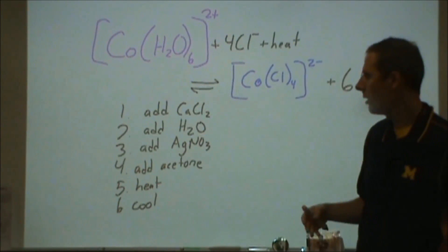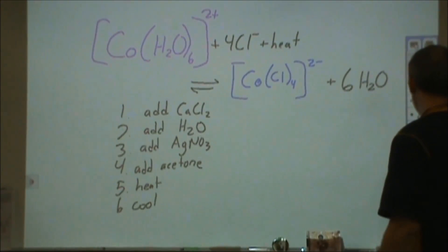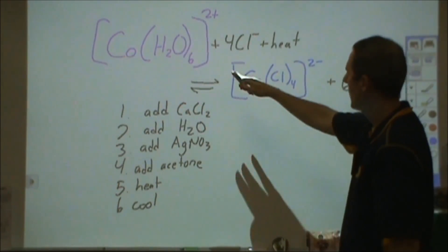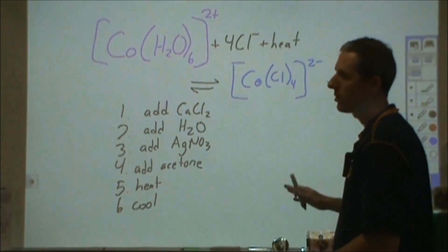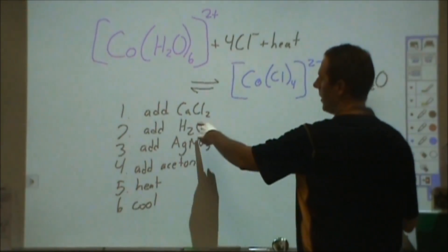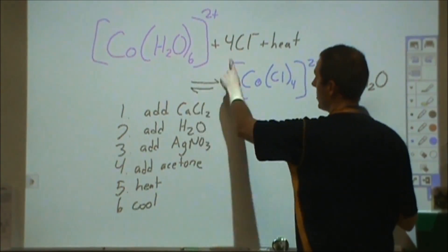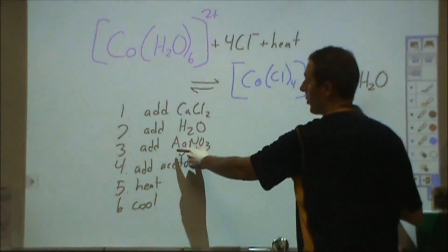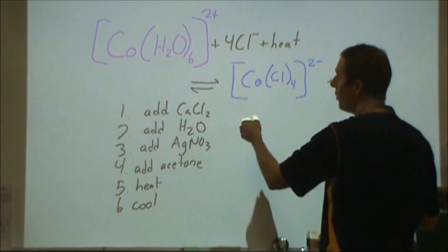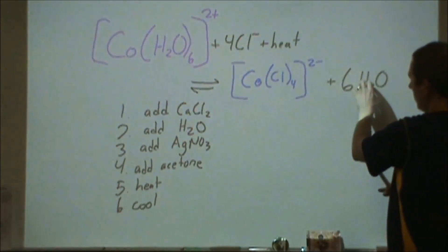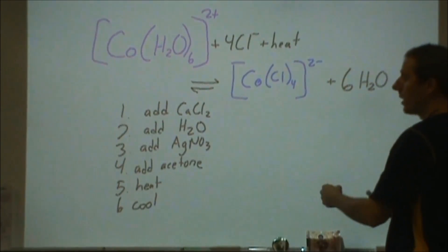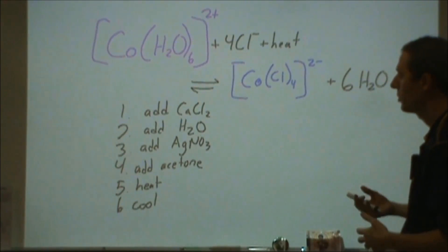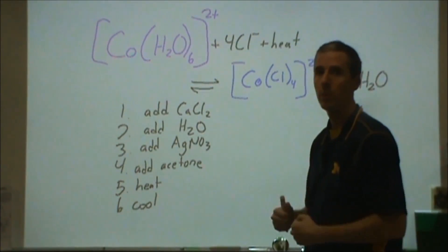What we're going to do is show some Le Chatelier principle demonstrations where we're going to add various features to this mixture. In the first one we're going to add calcium chloride which is a source of chloride ions. The second one we're going to add water. The third we're going to add silver nitrate which is going to remove chloride ions. And the fourth we're going to add acetone that's going to remove water. The fifth we're going to add energy, thermal energy. We're going to raise the temperature. And the sixth we're going to reduce the temperature.